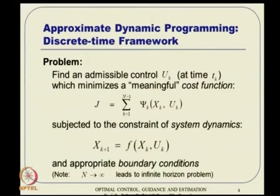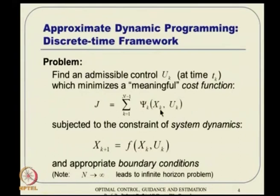Everything will happen in the discrete time domain here, so the integral will be substituted by a summation. The objective is still very similar to what you have seen before: to optimize this cost function J, find a u_k so that you can optimize it. Formally speaking, find an admissible control u_k which minimizes this cost function, subject to the constraint of system dynamics, with appropriate boundary conditions. We will assume n tends to infinity, meaning we are talking about infinite time problems, which are typically regulator problems. Most of the examples that follow will have a quadratic cost function.